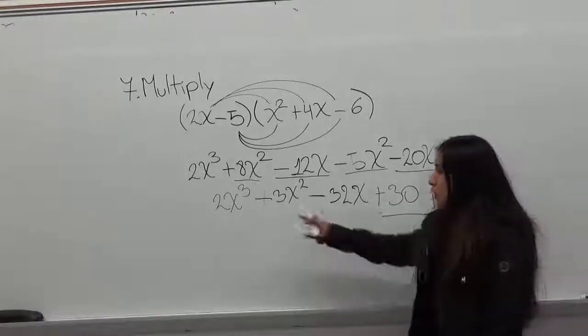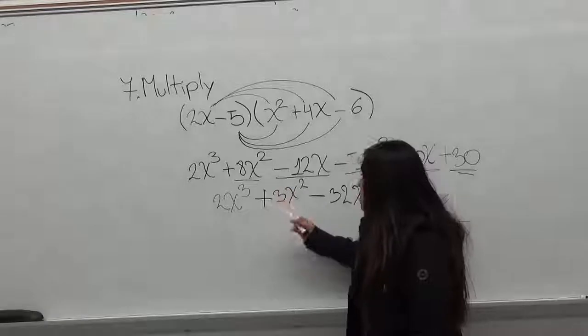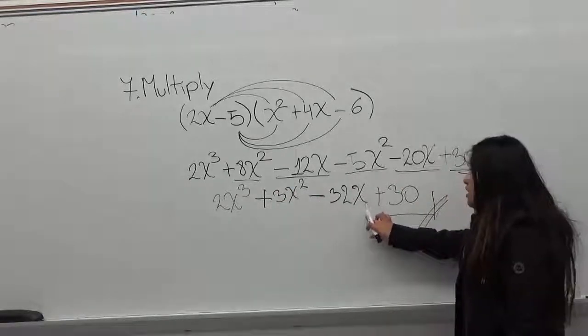So the final answer is 2x cubed plus 3x squared minus 32x plus 30.